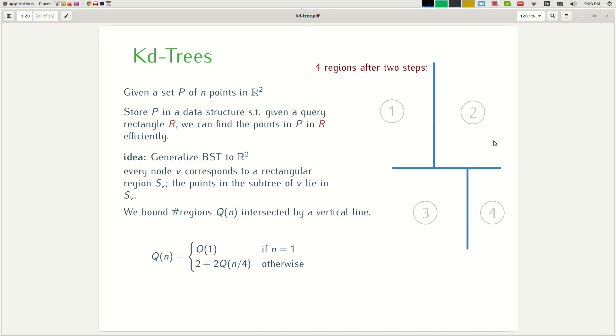And now I can make one interesting observation here. Any vertical line or horizontal line can intersect at most two of these four regions. So for example, this vertical line can intersect either one and two, one and three, two and three, or two and four. This horizontal line can intersect one and two, or three and four. There is no way to draw a horizontal or vertical line that can intersect three of them. So therefore, when I look at the recursion that bounds the region that I intersect by a vertical or horizontal line, I always get this recursion.